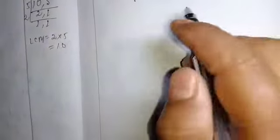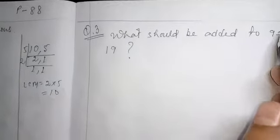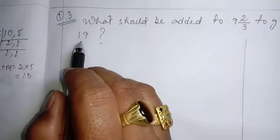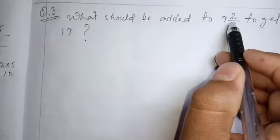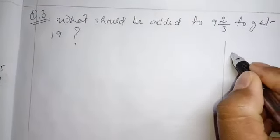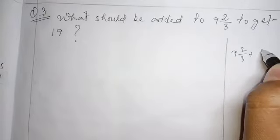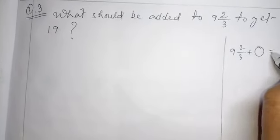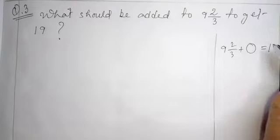Question number 3. What should be added to 9, 2 by 3 to get 19? What number we have to add to 9, 2 by 3 to get 19? It should be like this, 9, 2 by 3. What numbers we have to add to it here? Then the answer will become 19.